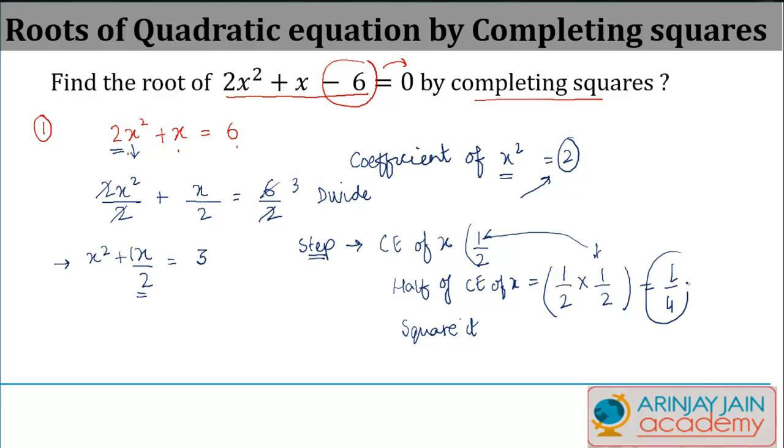So whatever is the output here, 1/4, I square that. That gives me 1/4 × 1/4, or in other words, 1/16. This value is added to both sides of the equation. So you get x² + x/2 + 1/16 = 3 + 1/16.